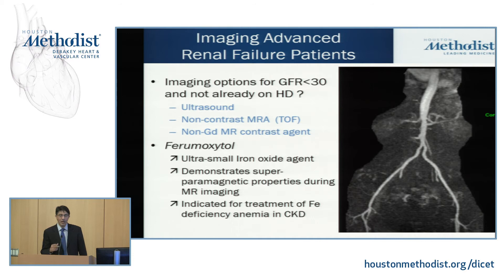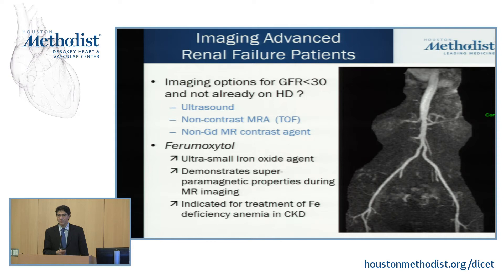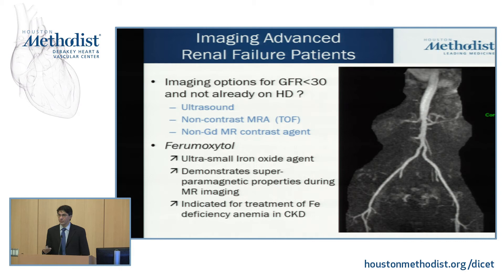For patients with GFR less than 30 not on hemodialysis, we have a few options: ultrasound, non-contrast MRA techniques, and ferumoxytol. Ferumoxytol is a paired iron-based paramagnetic agent indicated for iron deficiency anemia, but it has paramagnetic properties we can use to our advantage. It produces excellent MR vascular images and can really salvage us when we have limited options for this patient population.